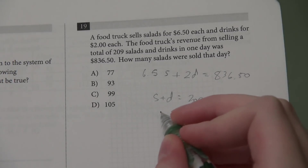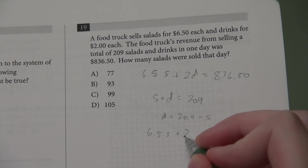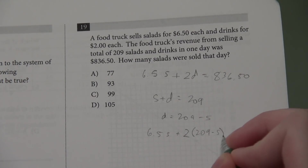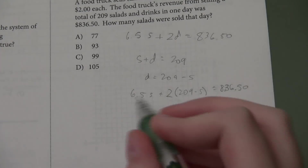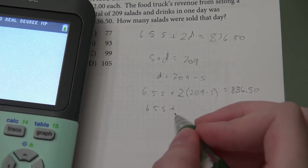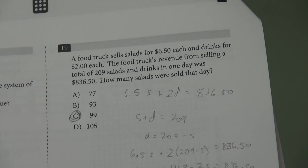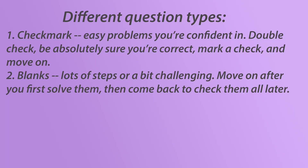The second level of questions are the blanks. These are for any problem that has an excessive number of steps in it, or challenged you even a little bit. Sometimes, if you're a bit challenged by a problem, you could be making a simpler mistake because you're so focused on getting the harder part of it right. Anything that's challenging like this doesn't get an automatic check, and only after you're done with the whole section do you go back and check each one. Giving your brain time to work on the other problems will make it easier for you to catch mistakes when you come back to them later. Blanks should account for anything between 10 and 20 questions in a section, so quite a fair number.